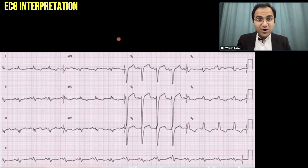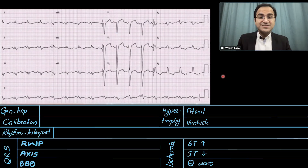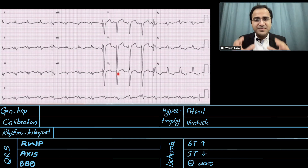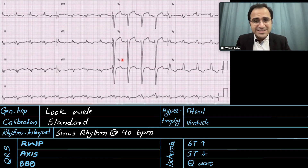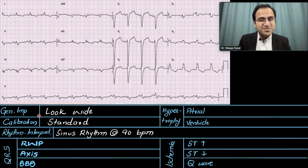Now we will solve this ECG using the 6-step method. What is your general impression? The general impression is that the ECG does not look normal — it is not very fast and not very slow, but it looks wide and has some abnormal morphologies in it.